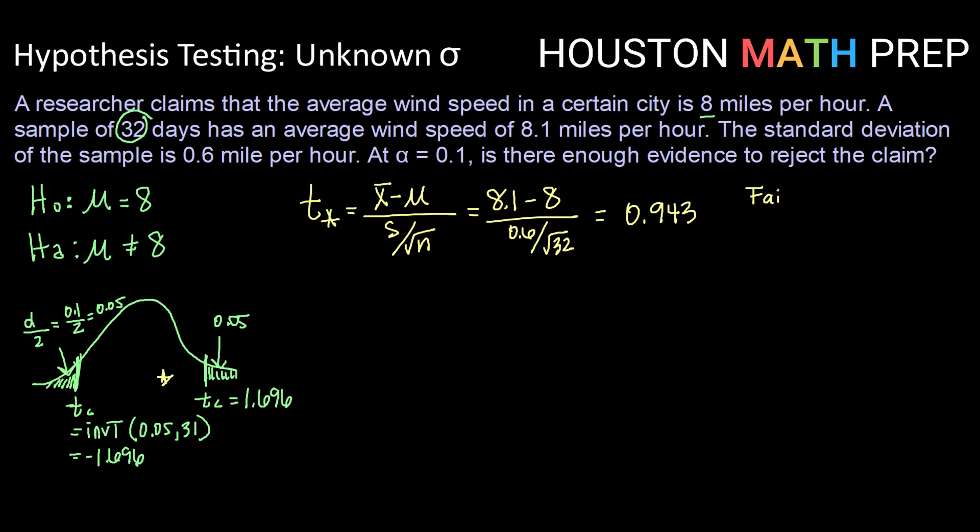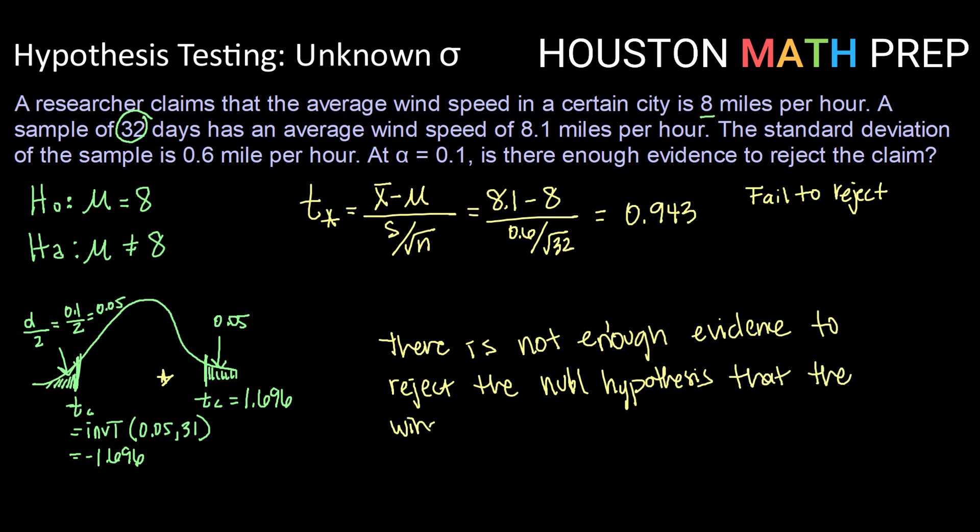So we here are going to choose to fail to reject our null hypothesis. So what we can conclude here is there is not enough evidence to reject the null hypothesis that the wind speed is 8 miles per hour.